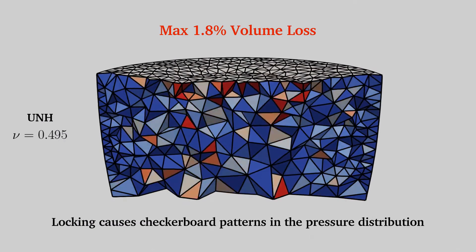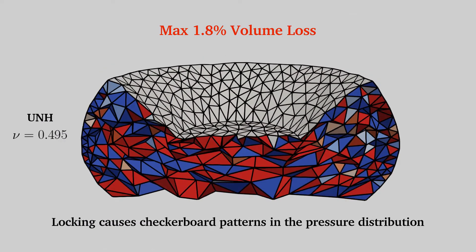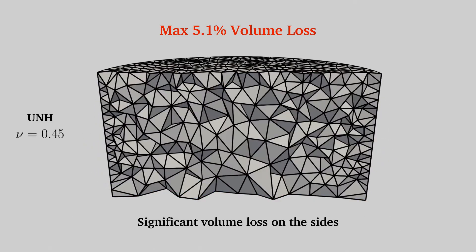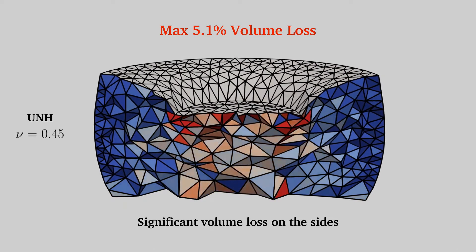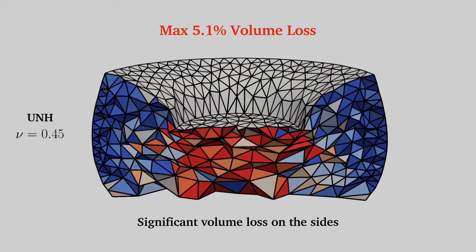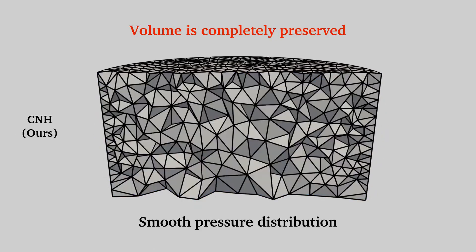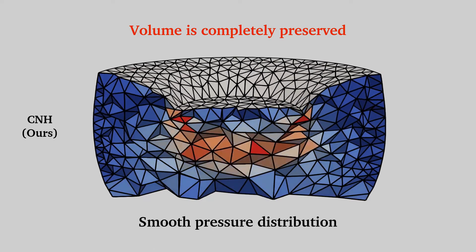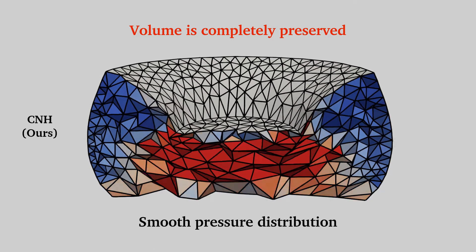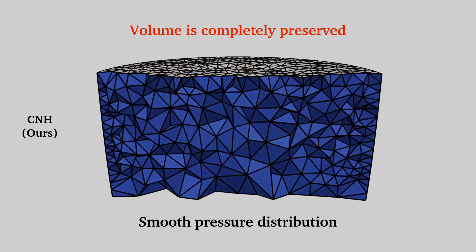Even when locking may not be visually apparent, it can cause checkerboard patterns in the internal pressure distribution. When a low Poisson's ratio is used instead, it causes a visible volume loss, especially on the sides. By constraining the volumes in zones instead, one is able to completely preserve the volume of the mesh without any locking. Local compression penalty also allows a smooth but realistic pressure distribution.